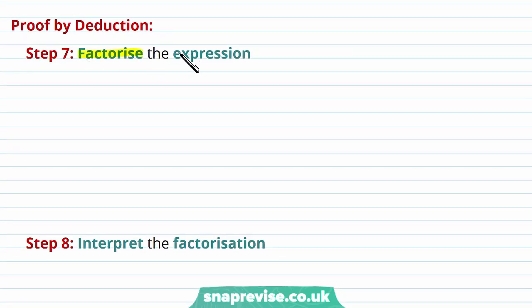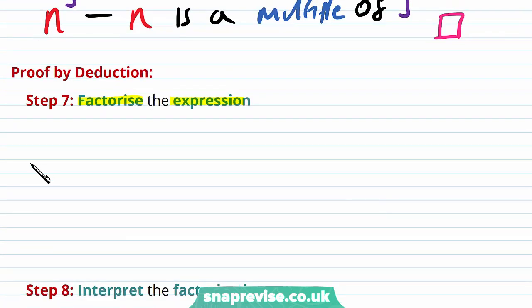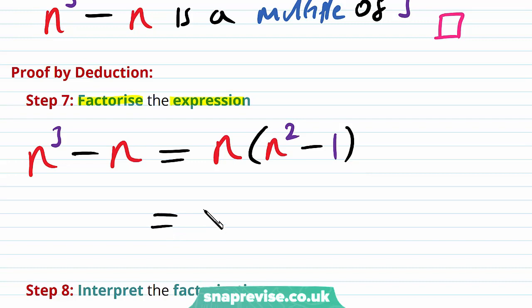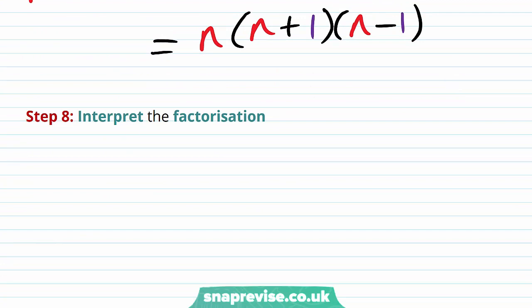For the proof by deduction, we factorize the expression. We have n³ − n, and we can factor out n to get n(n² − 1). Since n² − 1 is a difference of two squares, we have n(n + 1)(n − 1) as the factorization. These three consecutive numbers n − 1, n, n + 1 are all factors of the expression n³ − n.